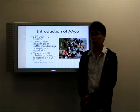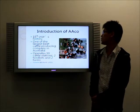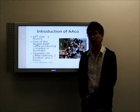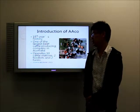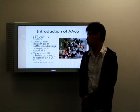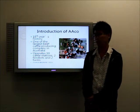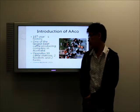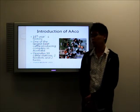Australian Agricultural Company Limited, also known as AACO, which has a 187-year history, is one of the largest beef cattle producing companies in Australia. It operates 18 cattle stations, 2 feedlots, and 2 farms.